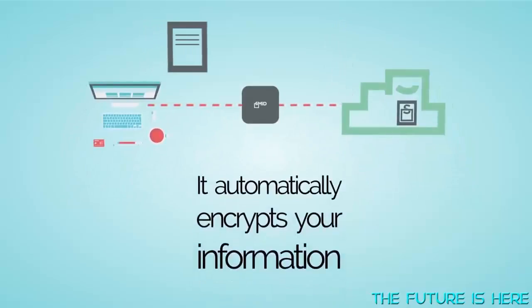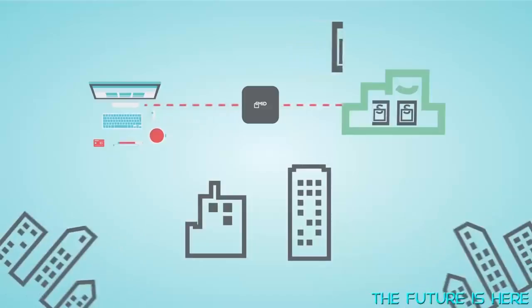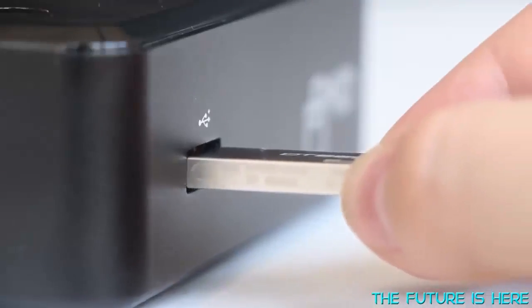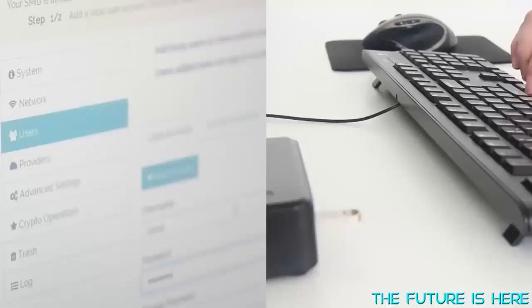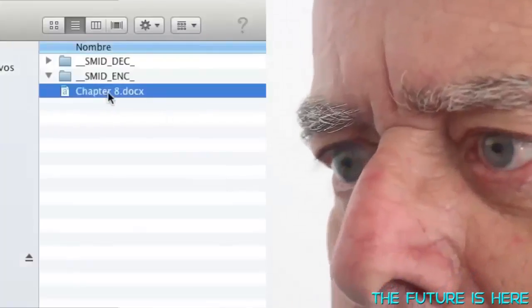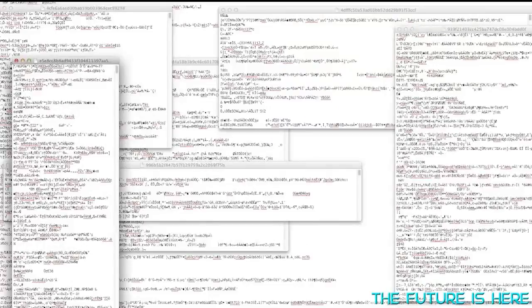It automatically encrypts your information before it leaves your home or office or wherever you are. You get a light, portable device and a single startup key. All you need to do is create an account and choose your cloud providers. That's it, you're up and encrypting all of your cloud-stored data. Even if someone did try to access or view your information in the cloud, all they would see is encrypted data. It would be of absolutely no value or interest to them at all.